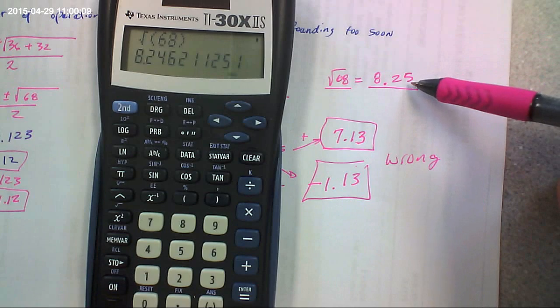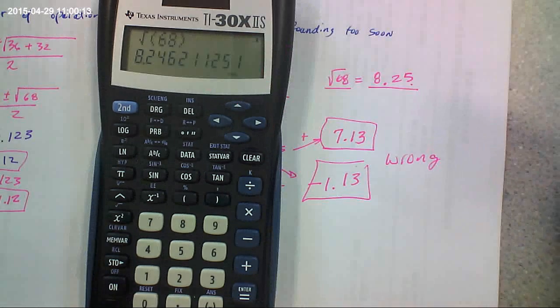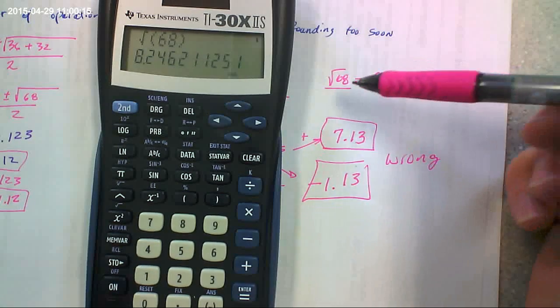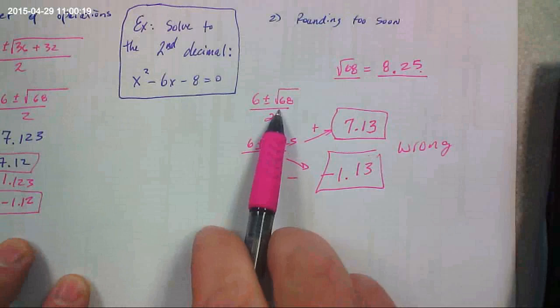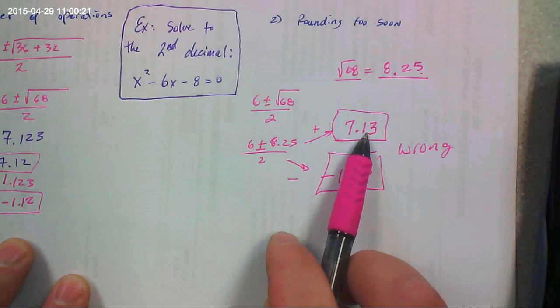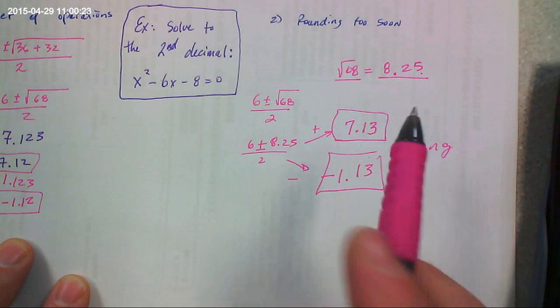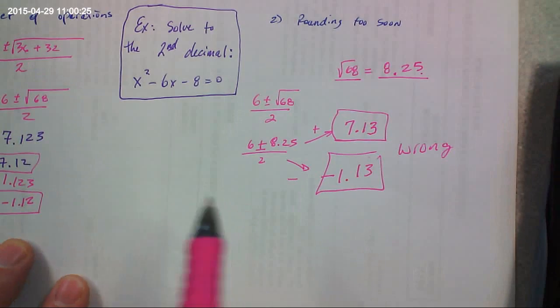So this is a huge rounding that's occurred here. Okay? So the mistake is, do not do it this way. Do not round first, then do the arithmetic, and round again. Round only once at the very end. Your last step is the rounding.